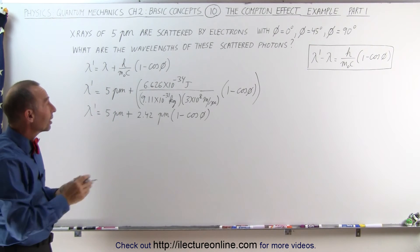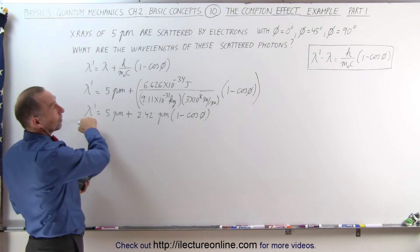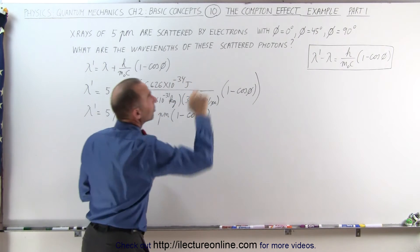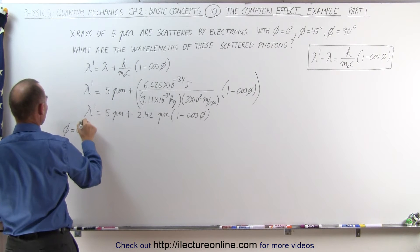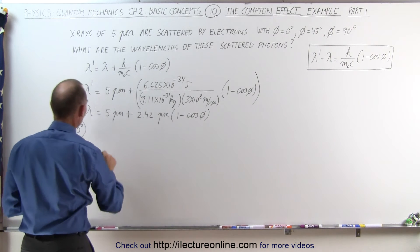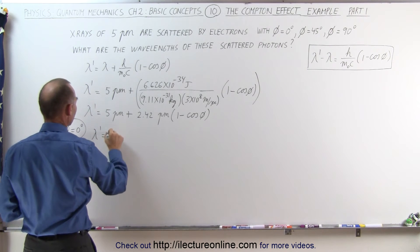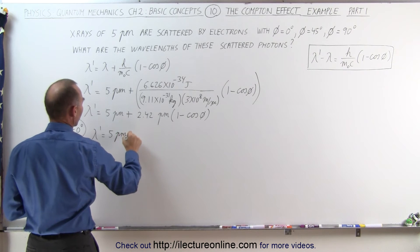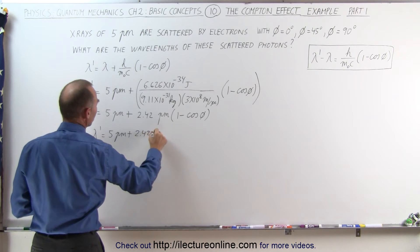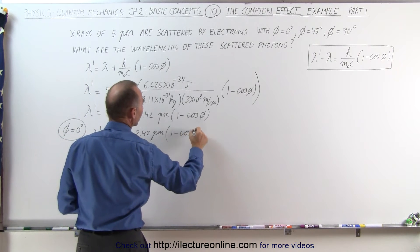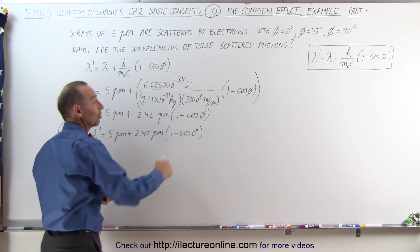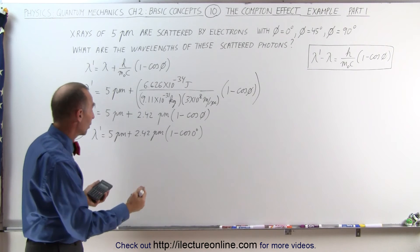So now what we need to do is calculate what this wavelength will be for the 3 scattering angles starting with phi equals 0 degrees. The first angle we get lambda prime is equal to 5 picometers plus 2.42 picometers times 1 minus the cosine of 0 degrees. And of course the cosine of 0 degrees is 1. 1 minus 1 is 0.